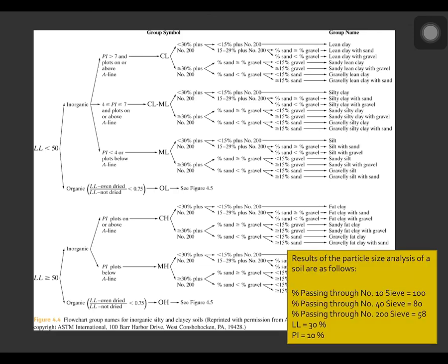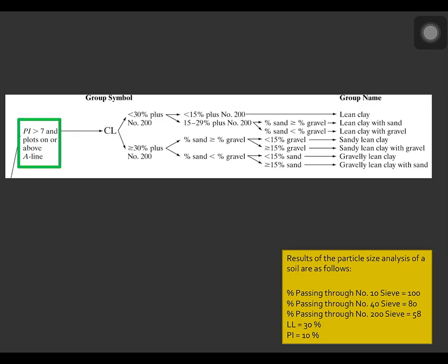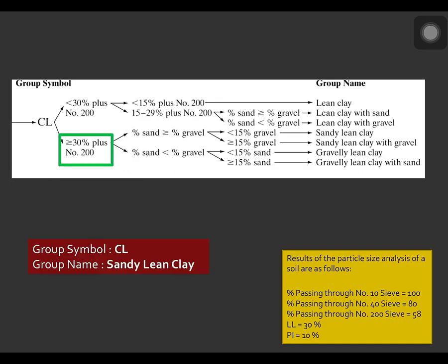So, the liquid limit is less than 50%. The plasticity index is greater than 7. And the percent passing the number 200 is greater than 30%. And the percent of sand is greater than the percentage of gravel. And the percentage of gravel is less than 15%. Therefore, the group name for this soil is sandy lean clay.